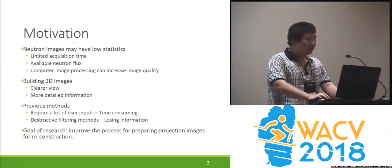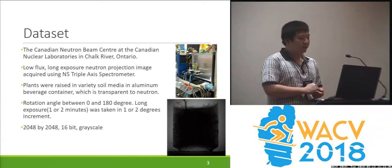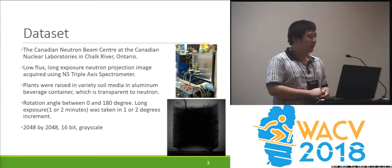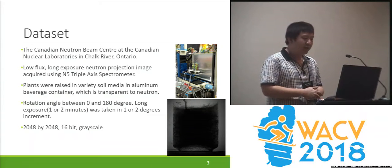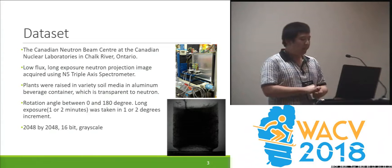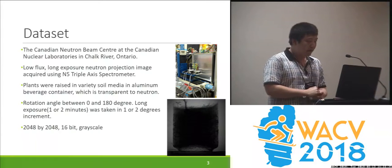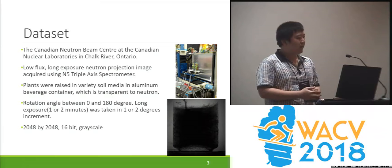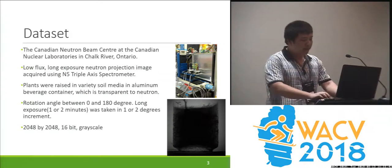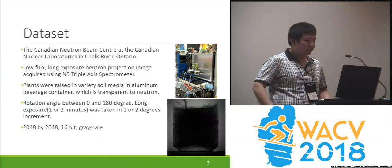Our goal of this research is to improve the process of preparing projection images for the reconstruction. The dataset we used was acquired from the Canadian Neutron Beam Center at the Canadian Nuclear Laboratories in Chalk River, Ontario. As shown in the top image, the images were acquired using low-flux, long-exposure neutron projection and acquired by a M5 triple-axis spectrometer. The plant was raised in a variety of soluble media in a commercial aluminum beverage container, which is transparent to neutron. The sample was rotated between 0 and 180 degrees with one or two degree increment, and each picture was taken with one to two minutes exposure. The bottom image is a sample image, each 2048 by 2048 in dimension and 16-bit grayscale.